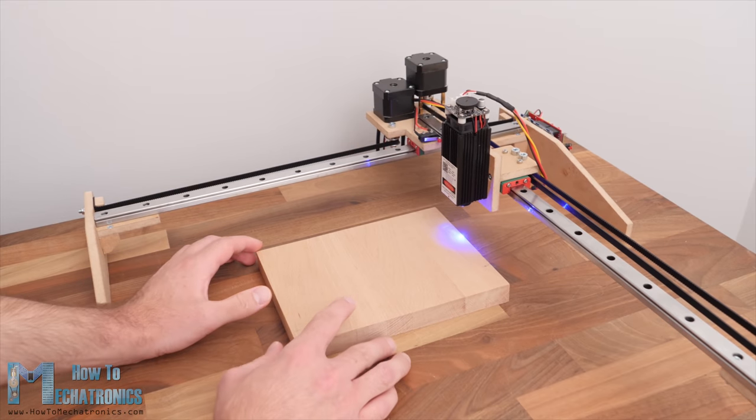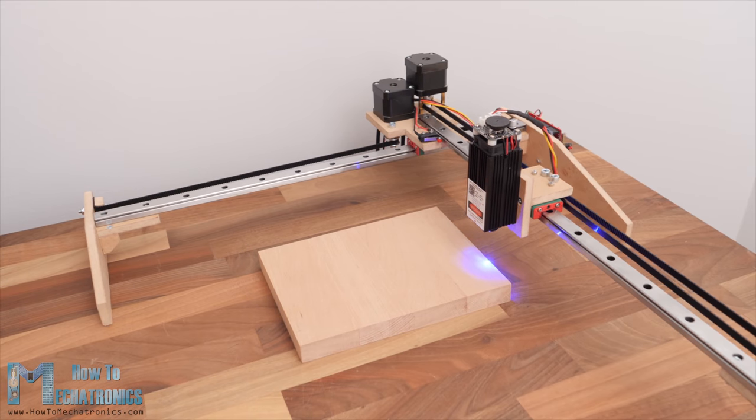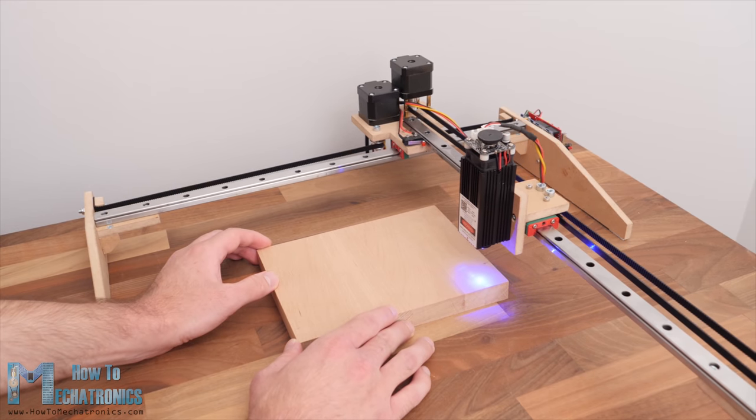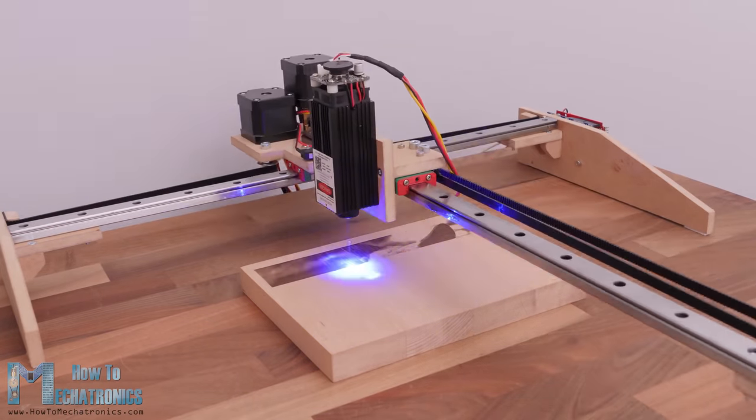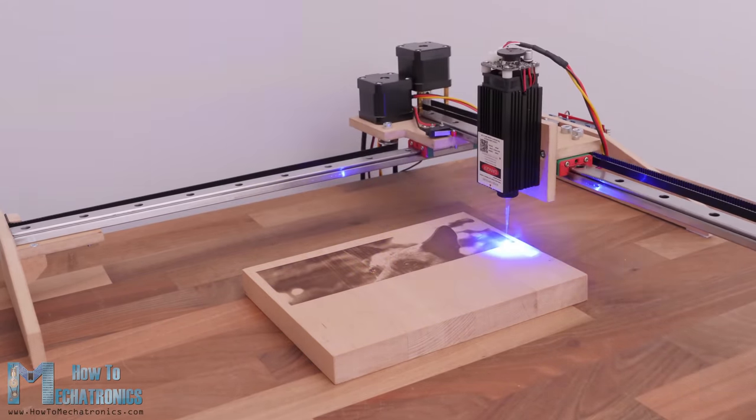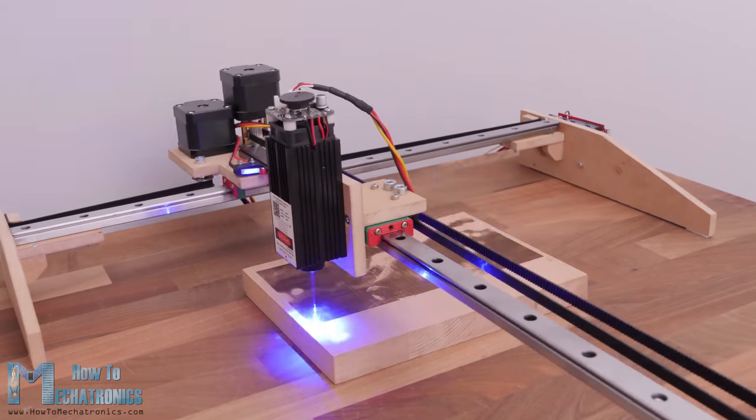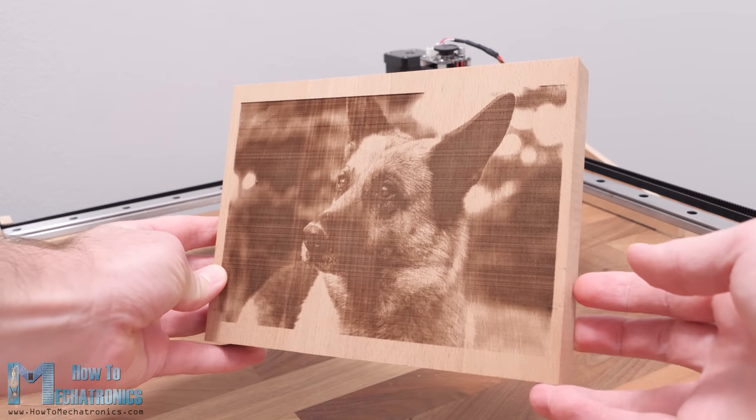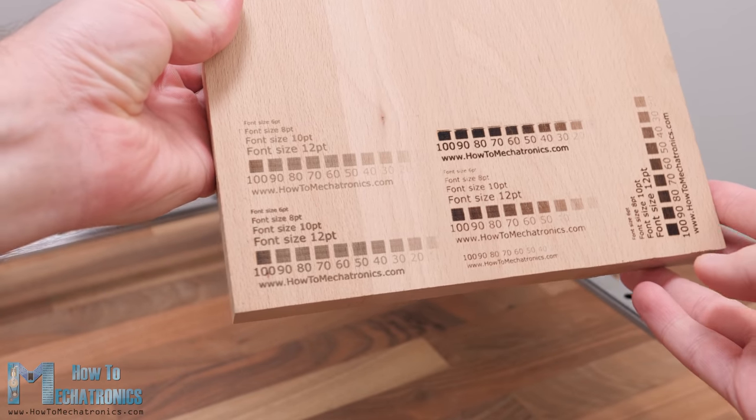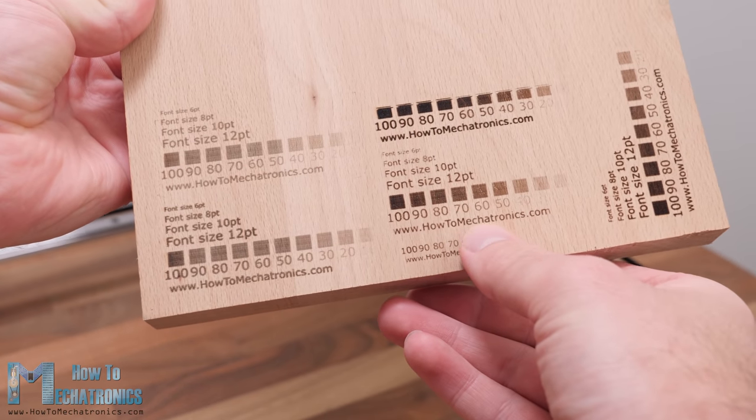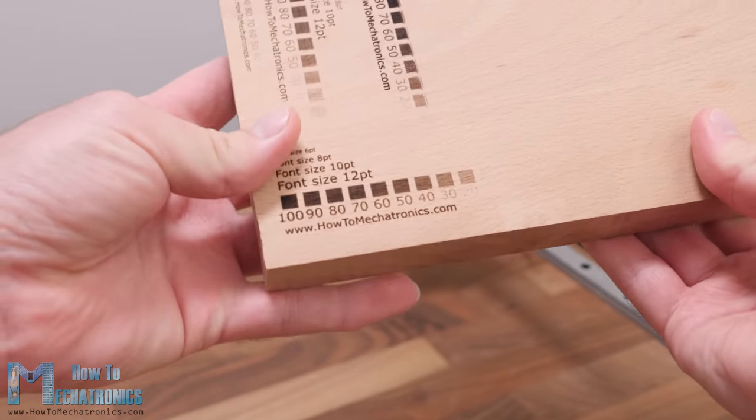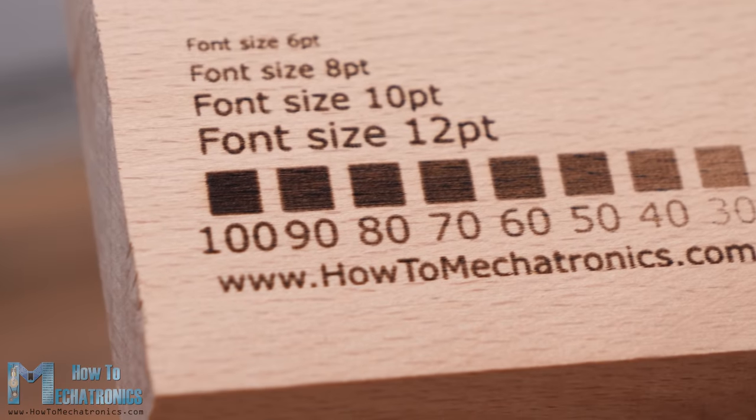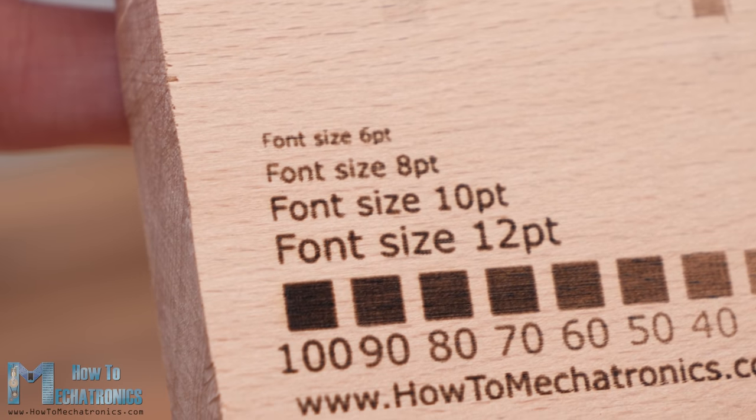Before we start the engraving we can use the frame button to outline or show us where the engraving will take place, so we can adjust our workpiece as needed. Please note that we must use laser safety goggles that will protect our eyes from the ultraviolet light of the laser. If we have calibrated our machine correctly we can get quite good engravings. For calibrating we could use this image that I made which has squares from 100 to 10% transparency and according to the results adjust the engraving speed and PWM values for the laser power.